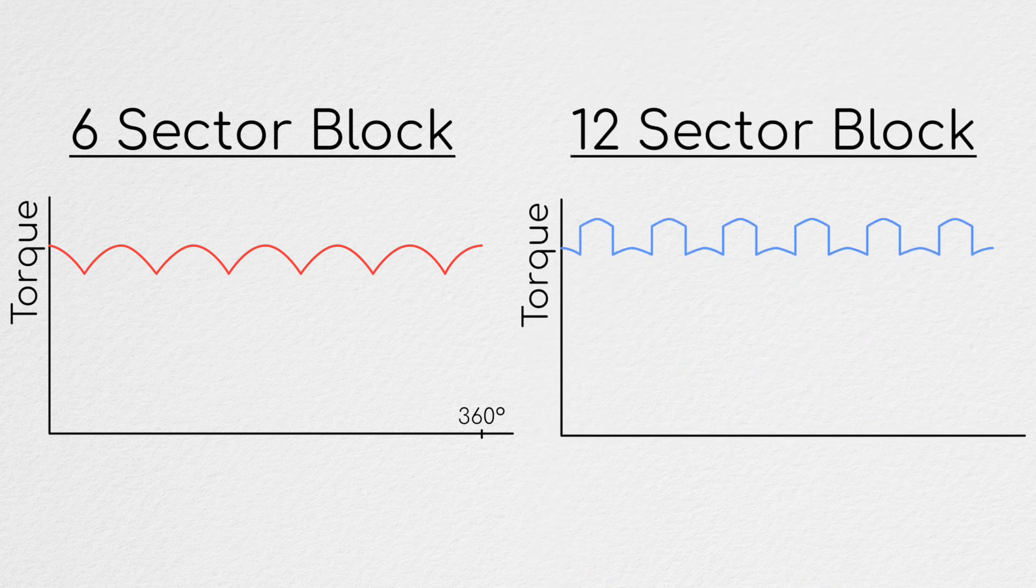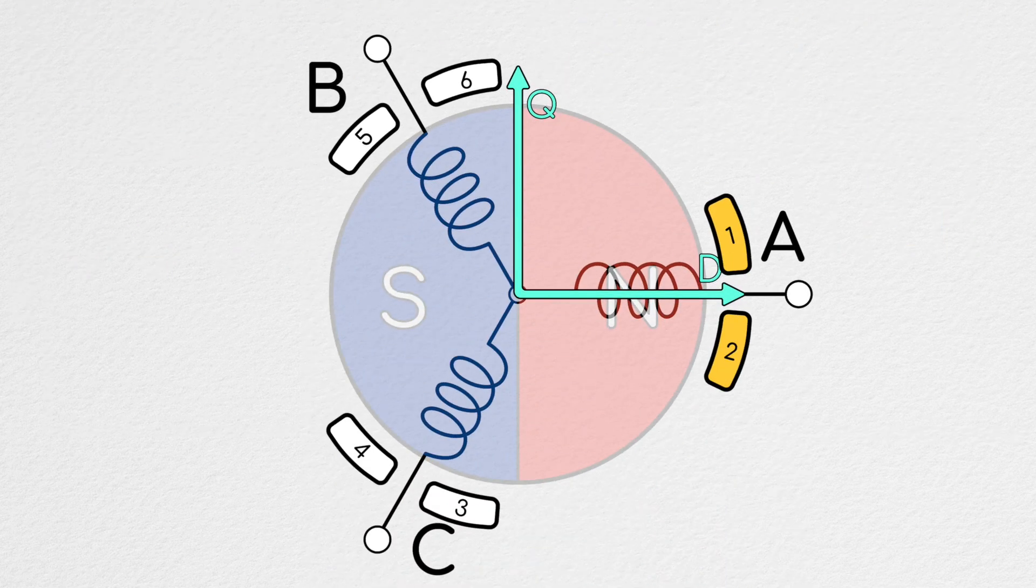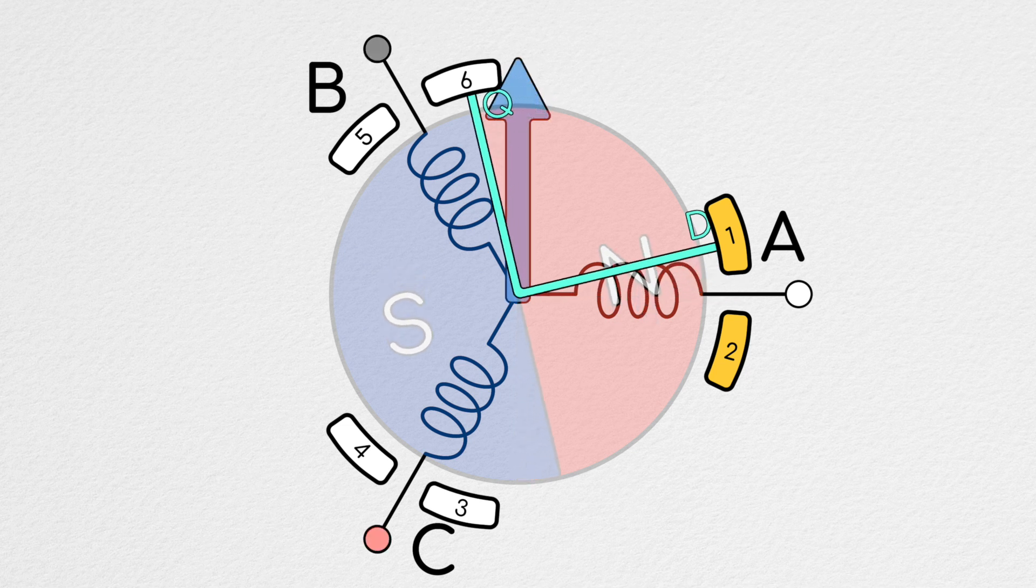So how can we get the best of both worlds? A better alignment with the Q axis without the added torque oscillations. Well, let's go back and see what it would look like to run this hypothetical 12 sector motor in the way we've been describing.